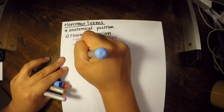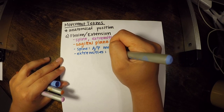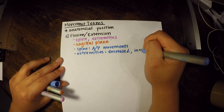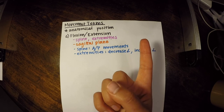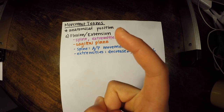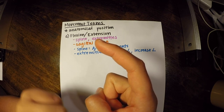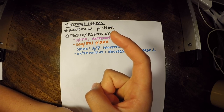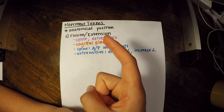For extremities, you can think of flexion as a decrease in angle and extension as an increase in angle. For example, flexing the interphalangeal joint decreases the angle between bones, with the knuckle as the axis of rotation. Bringing your chin to your chest is cervical spine flexion; looking up toward the ceiling is cervical spine extension.